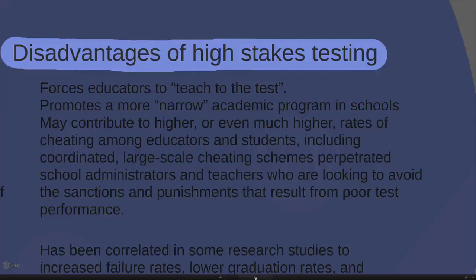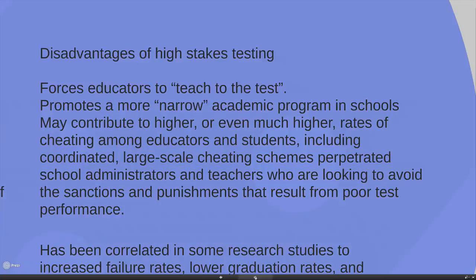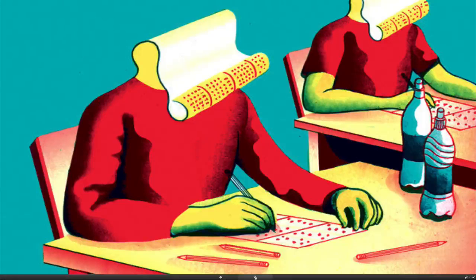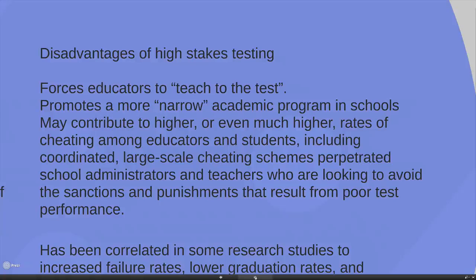The disadvantages of high stakes testing have been shouted from the rooftops by various communities. The first is that it forces educators to teach to the test. If you have one test — a solid line — and everyone has to do it, teachers are going to teach to that test, especially if they know their own future and the future of their school depends on that result. So you promote a narrow academic program in schools, focusing only on key subjects.